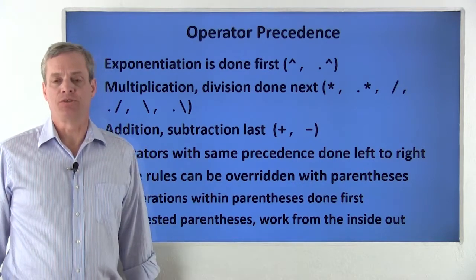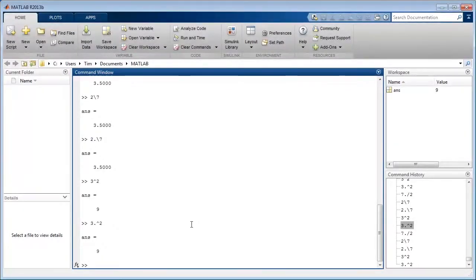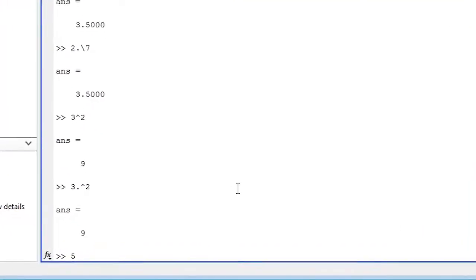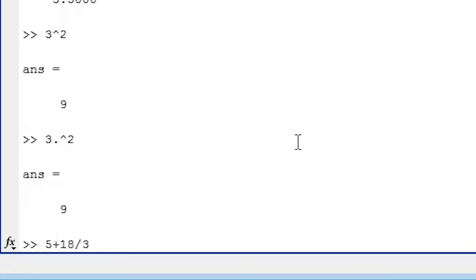Now let's do some examples of these rules. If we type an expression like 5 plus 18 divided by 3 squared, the exponent will be evaluated first. So MATLAB will calculate 3 squared and return 9. Division is done before addition, so the next calculation will be 18 divided by 9 which results in 2. Finally, the addition is done last, so 2 and 5 will be added and the overall result will be 7.